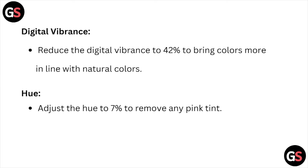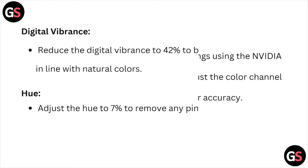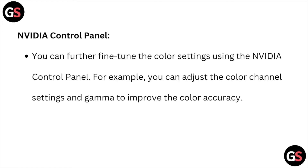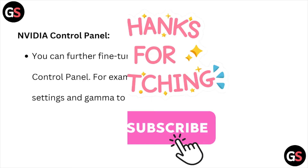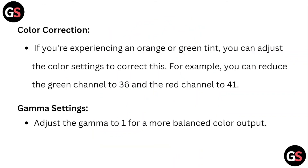Adjust the hue to 7% to remove any pink tint. When it comes to the Nvidia Control Panel, you can further fine-tune the color settings — for example, you can adjust the color channel settings and gamma to improve color accuracy.